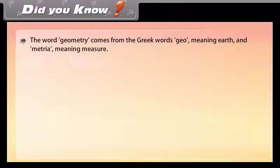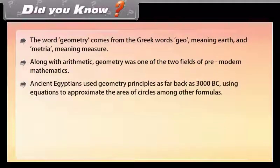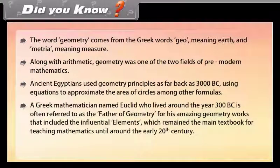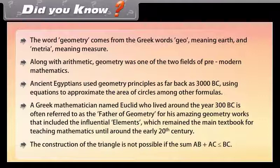Did you know? The word geometry comes from the Greek words 'geo' meaning earth and 'metria' meaning measure. Along with arithmetic, geometry was one of the two fields of pre-modern mathematics. Ancient Egyptians used geometry principles as far back as 3000 BC, using equations to approximate the area of circles among other formulas. A Greek mathematician named Euclid, who lived around 300 BC, is often referred to as the father of geometry. His influential work 'Elements' remained the main textbook for teaching mathematics until around the early 20th century. Note: the construction of a triangle is not possible if the sum AB plus AC is less than or equal to BC.